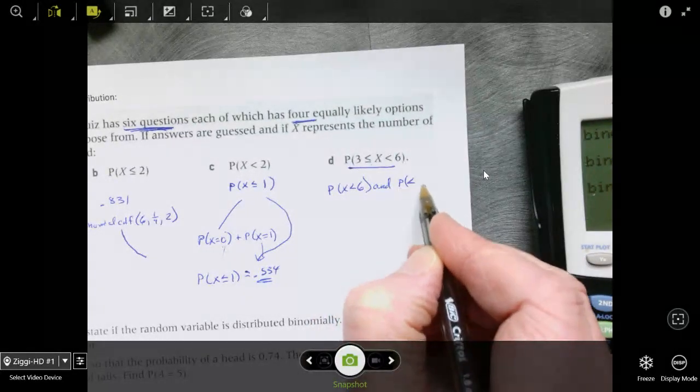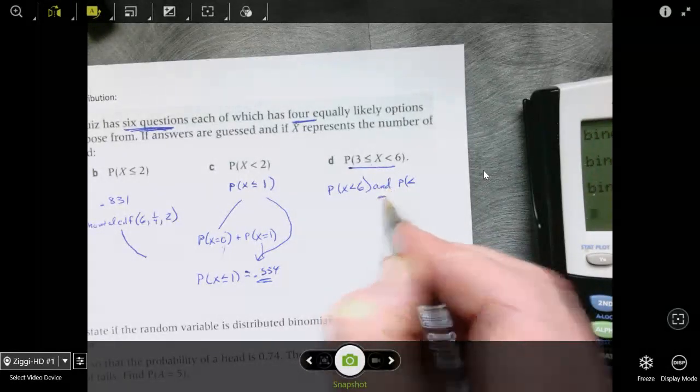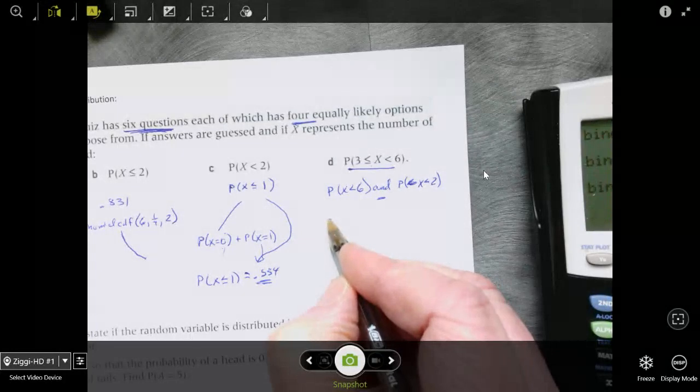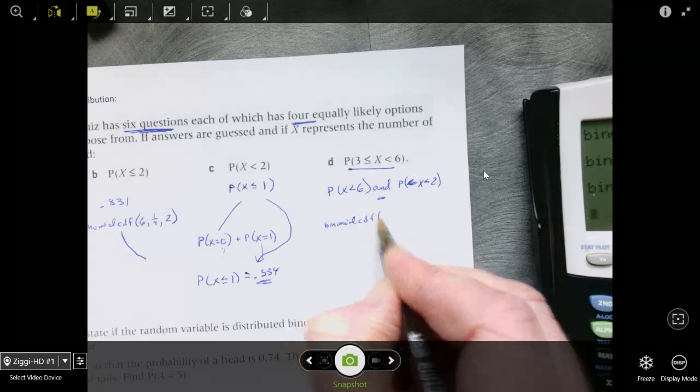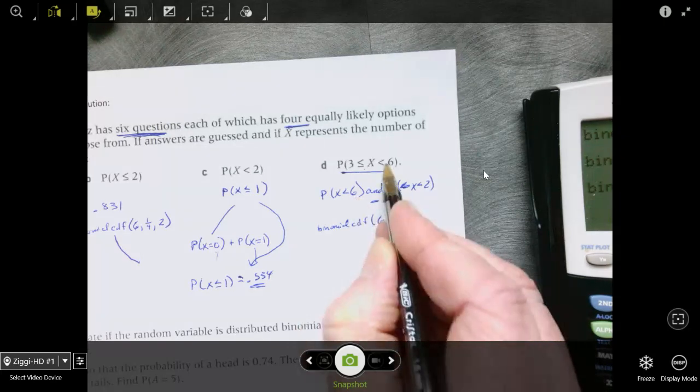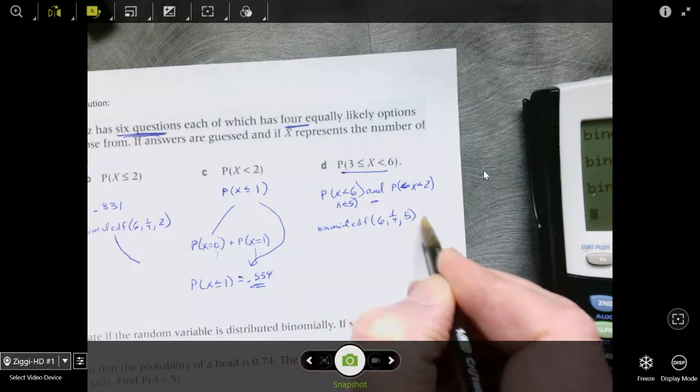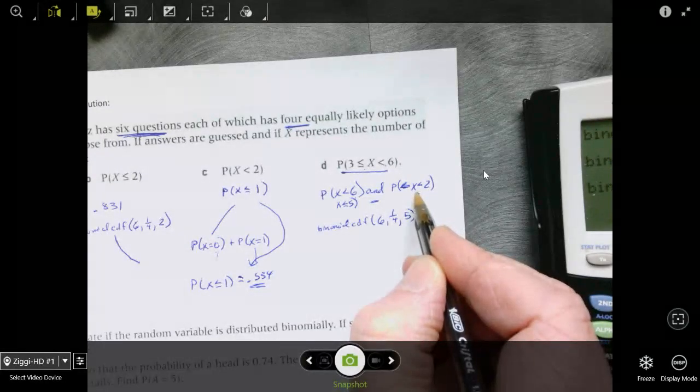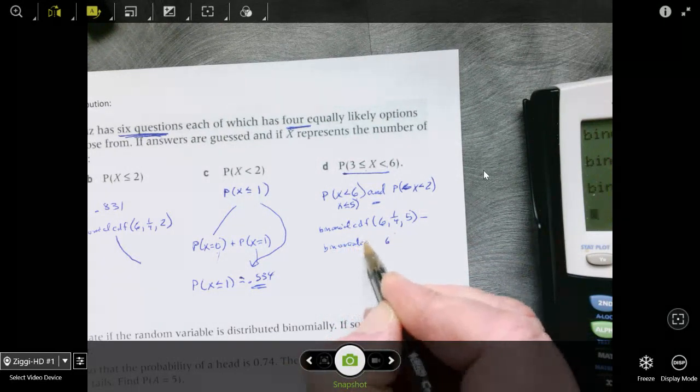All right, so we're going to use the CDF function and we're going to find binomial CDF for 6, 1 fourth and then x is less than 6 means we're talking about x is less than or equal to 5. And from that, you're going to subtract the probability that x is less than 2. Less than or equal to 2 because we want everything bigger than 3, so we don't want to include 3 in that.